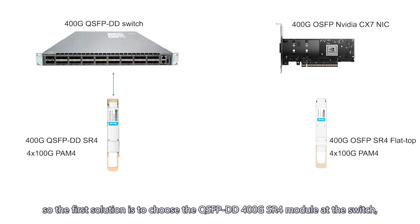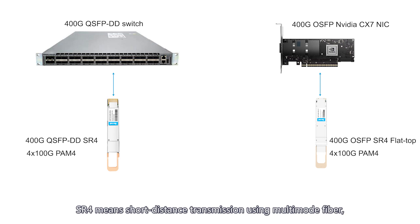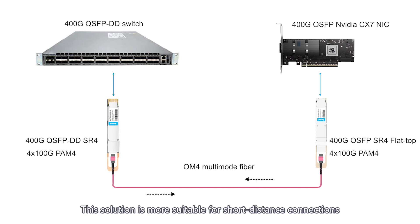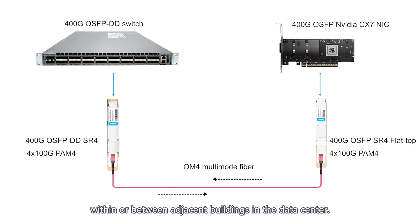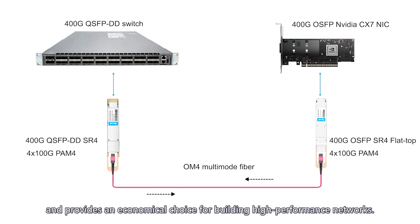The first solution is to choose the QSFPDD 400G SR4 module at the switch and use the OSFP 400G SR4 module at the server. SR4 means short-distance transmission using multi-mode fiber, where '4' refers to four optical channels. Both modules use 100G PAM4 modulation and OM multi-mode fiber. This solution is suitable for short-distance connections within or between adjacent buildings in the data center, and the SR4 module is relatively low cost, providing an economical choice for building high-performance networks.